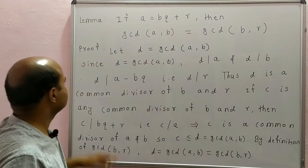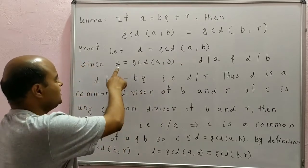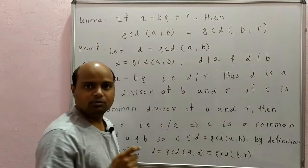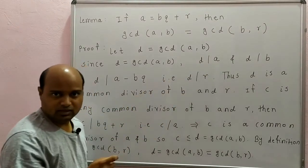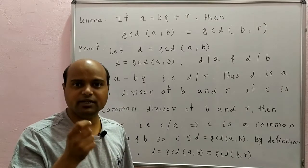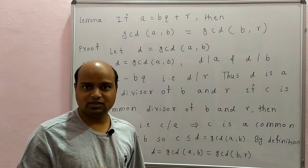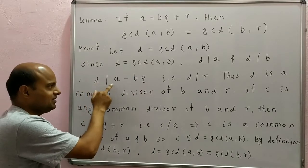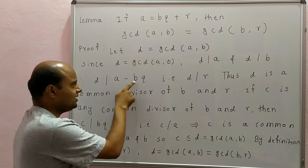Let D be the GCD of A and B. Since D is the GCD of A and B, by the definition of GCD, D divides A and D divides B. Since D divides A and D divides B, we have learned one result: if D divides A and D divides B, then D divides the linear combination of A and B. You can see that result in the video on Greatest Common Divisor. So D divides A minus BQ, which is a linear combination of A and B.